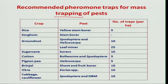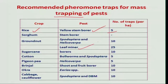Scientists have recommended pheromone traps for use in pest management programs in various crops. In rice, for the management of yellow stem borer, you can use 5 traps per hectare. In case of leafminer in groundnut, you can use 25 traps per hectare so that one can trap the adults and reduce the pest population in a location.